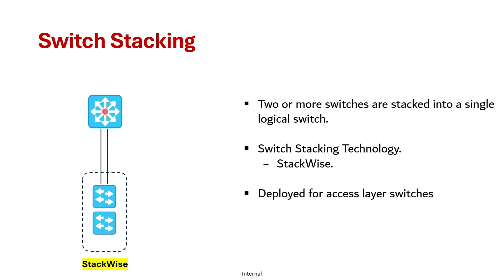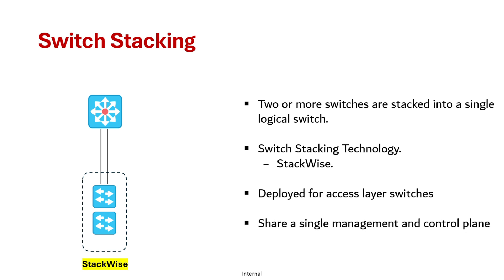Stacking is usually deployed for access layer switches. VSS is deployed at the distribution or core layer, and stacking at the access layer. Stacking can combine two or more switches, whereas VSS uses exactly two switches. Stacked switches share a single management control plane, which is one of the key advantages.